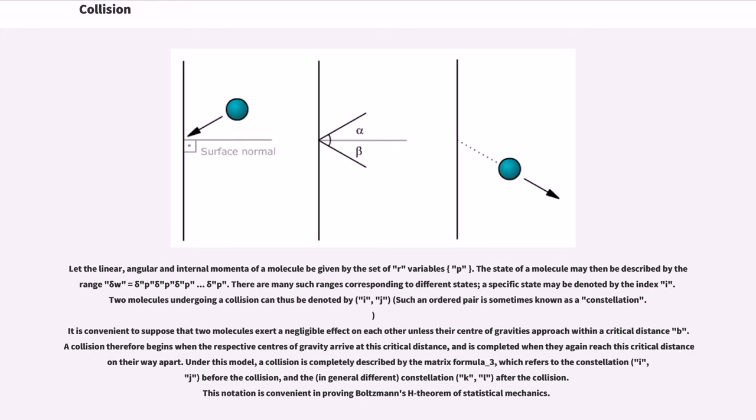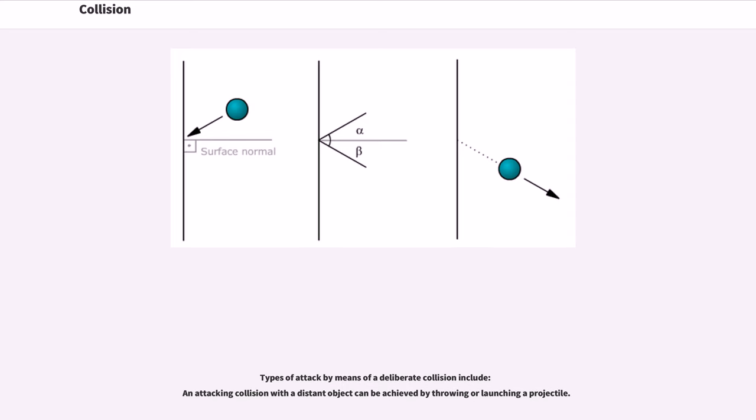Two molecules undergoing a collision can thus be denoted by (i,j). It is convenient to suppose that two molecules exert a negligible effect on each other unless their centers of gravity approach within a critical distance ρ. A collision therefore begins when the respective centers of gravity arrive at this critical distance, and is completed when they again reach this critical distance on their way apart. Under this model, a collision is completely described by the matrix, which refers to the constellation before the collision, and the constellation after the collision. This notation is convenient in proving Boltzmann's H theorem of statistical mechanics.